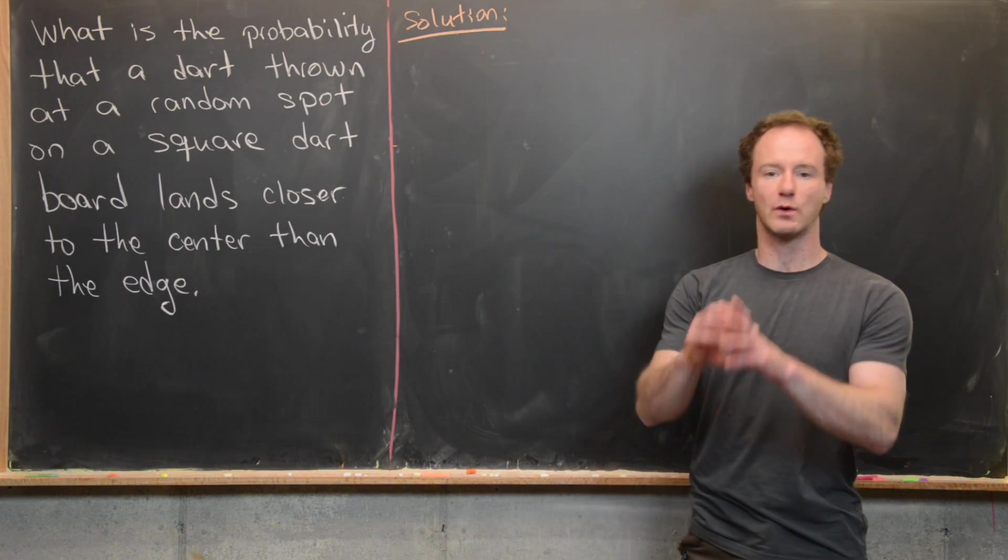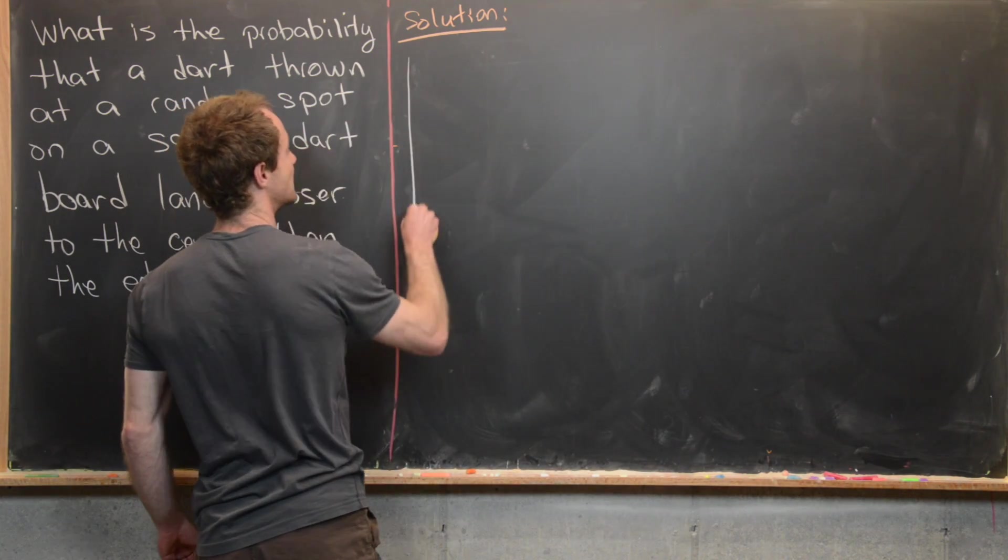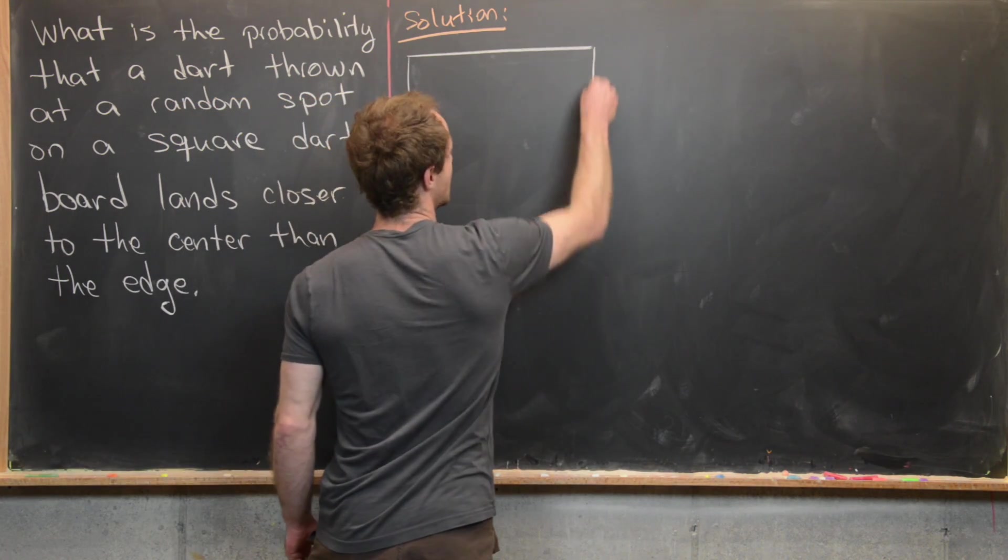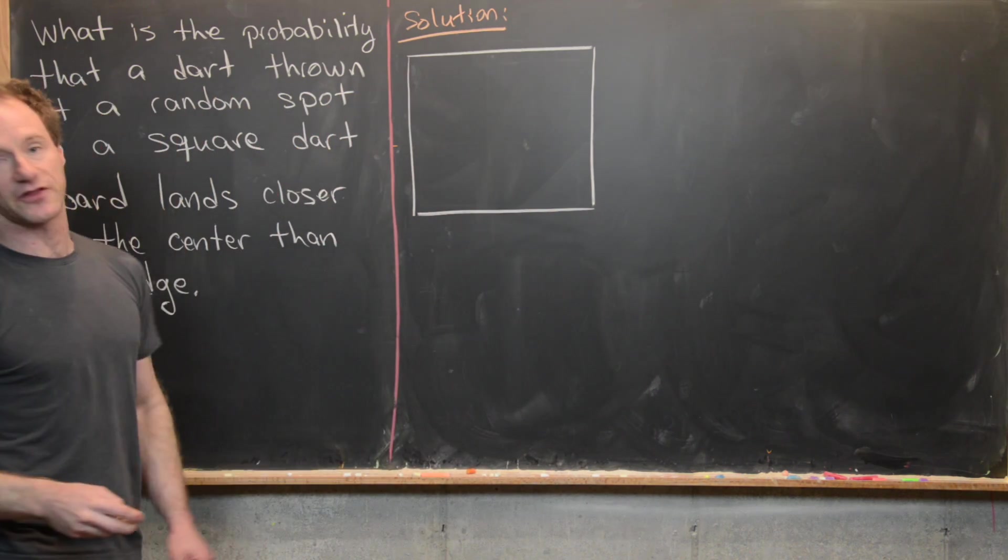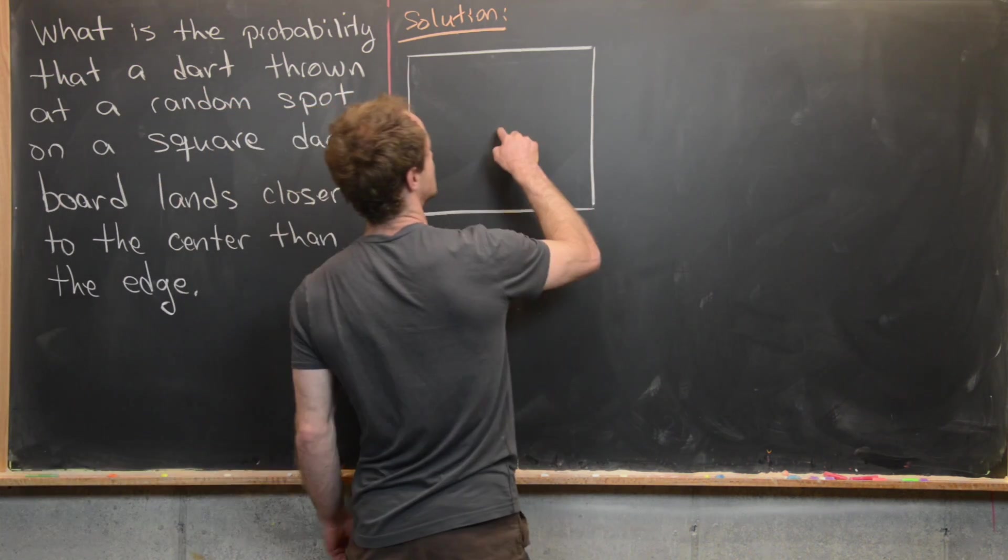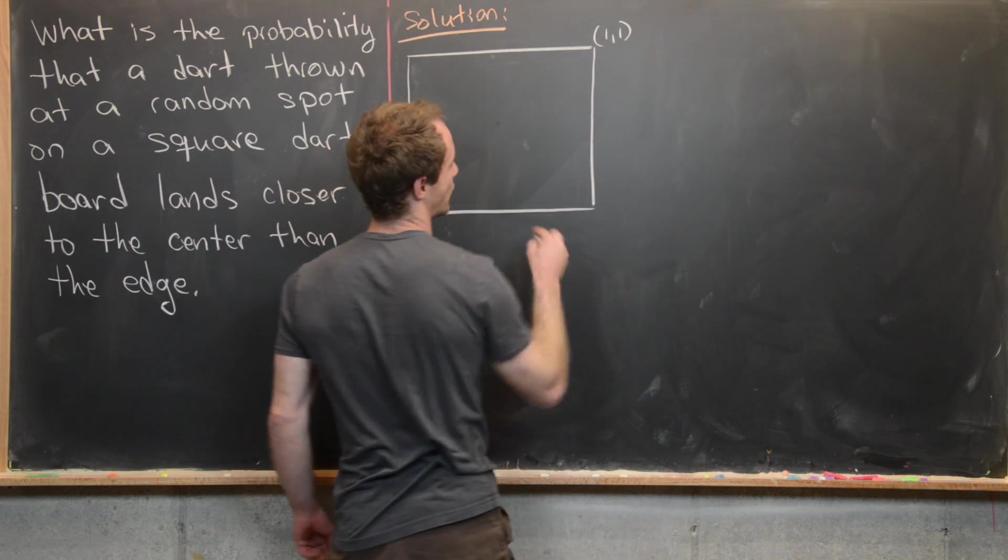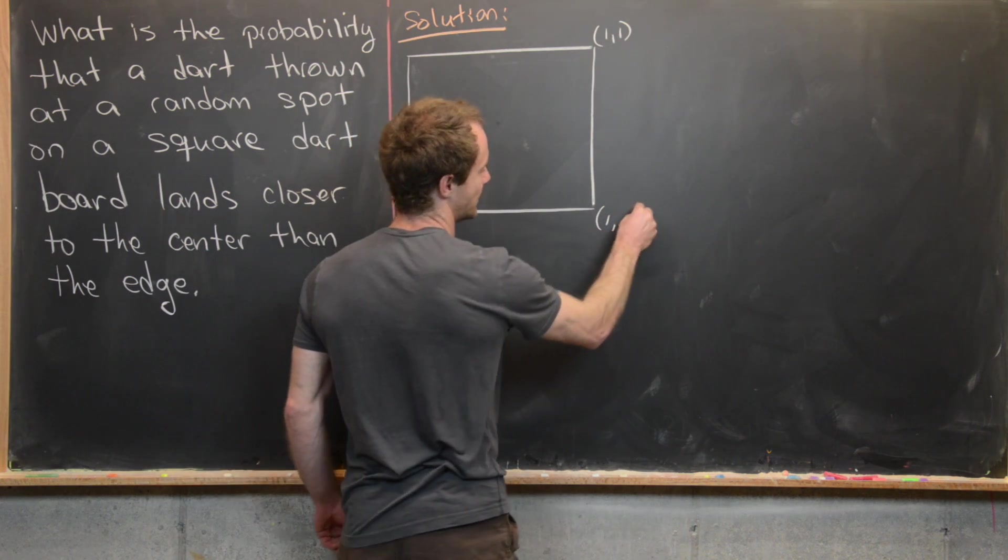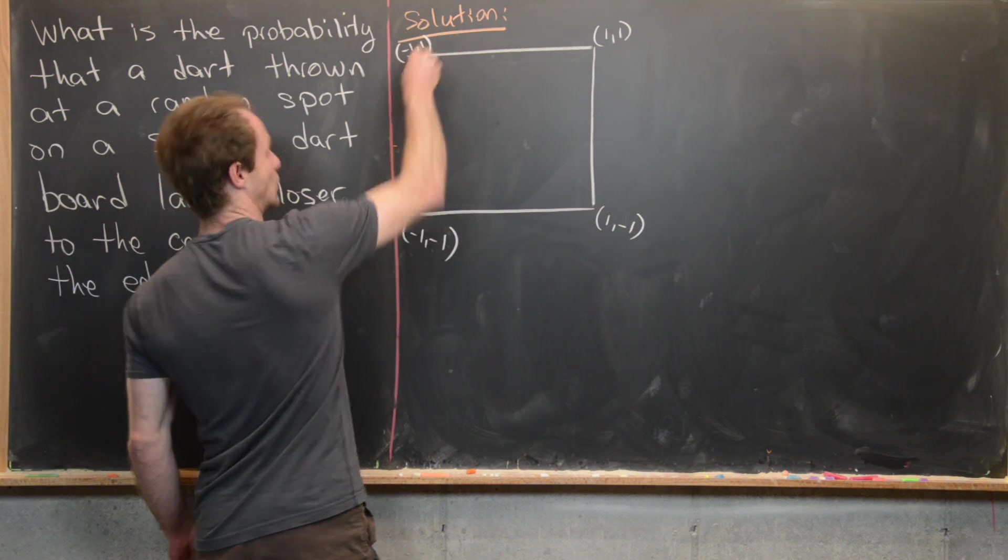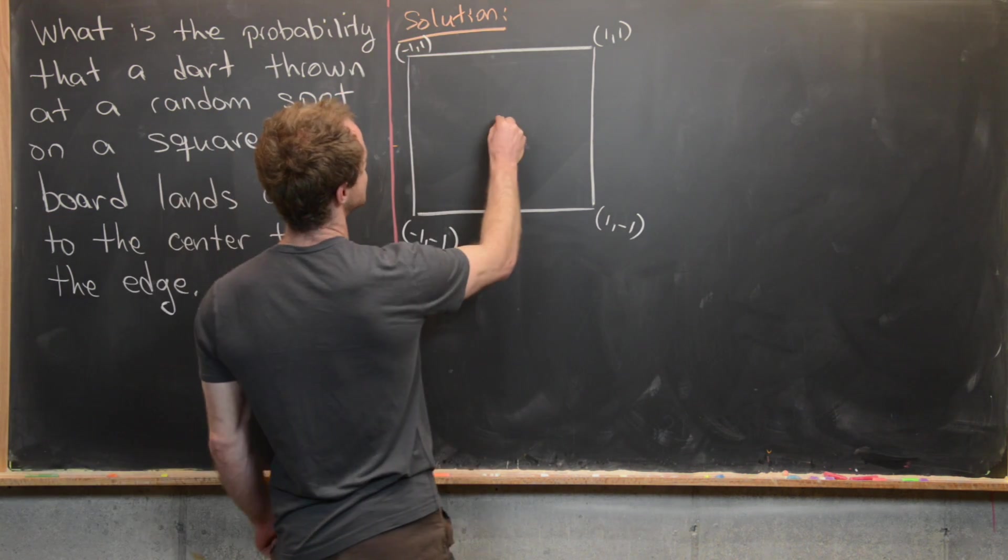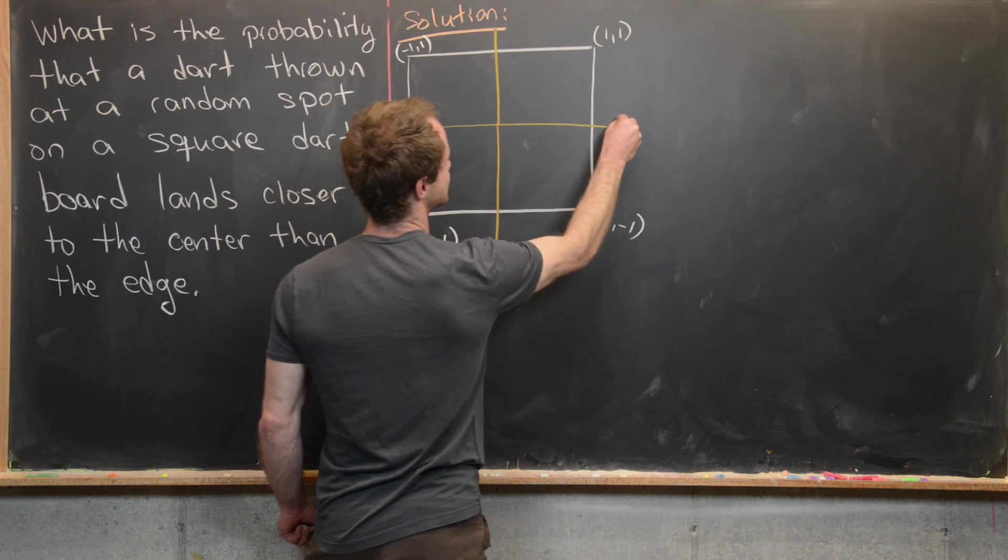So the first thing that we'll do is we'll put this in the Cartesian coordinate plane, in other words the xy plane, and we'll do it in a way so that the board is scaled so that it has length 2. And we'll also center it at the origin. So in other words this point up here will be the point (1,1), here will be the point (1,-1), (-1,-1), and then (-1,1). And then that means that the coordinate axes go straight through the middle of this thing.